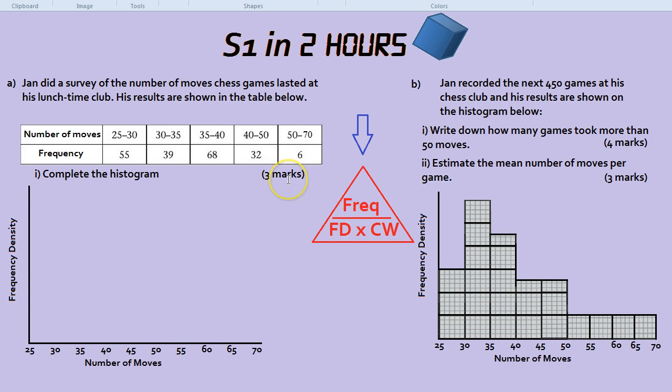Now, what have they given us? They've given us the frequencies, as in how many times it happened. So we've got the top of the triangle. They've given us the class width, actually, because each of these are classes between 25 to 30, 30 to 35.